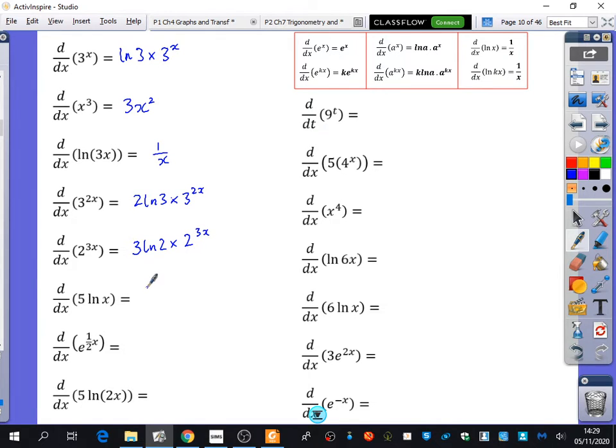Then we've got 2 to the power of 3x, which will be 3ln2 times 2 to the power of 3x. Then we've got 5lnx, 5 over x, because it's 5 multiplied by 1 over x when it differentiates. e to the half x is differentiated to a half e to the half x. And here we've got 5ln2x, that is 5 over x. And look, it's the same as this one that we have here, which is weird. Those two graphs have actually got the same gradients at the same points.